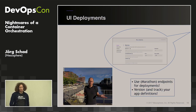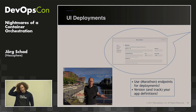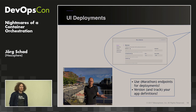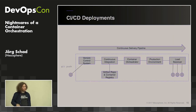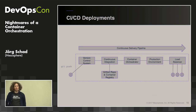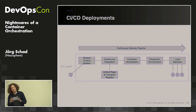UI deployments: I sometimes do this in demos, but in production it should never happen. You should only interact with your cluster via versioned app definitions through some kind of API endpoints. At best, they come from a CI/CD setup. In most production clusters we set up, everything deployed to the production cluster should have gone through the CI/CD platform, which implicitly ensures you can always rebuild the current cluster state.